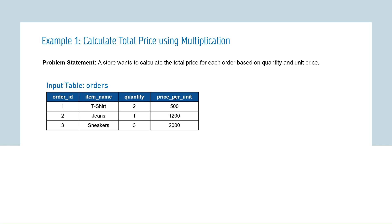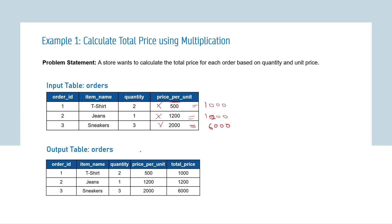What we want to calculate is the total price for each order. For order ID 1, the total price is 2 × 500 = 1000. For order ID 2, the total price is 1 × 1200 = 1200. For order ID 3, it is 3 × 2000 = 6000. We are simply multiplying the quantity and price per unit columns to get the total price. The output table will have a new column called total price.